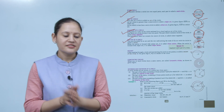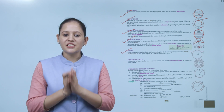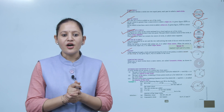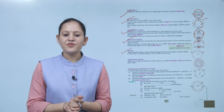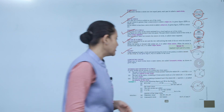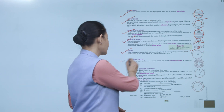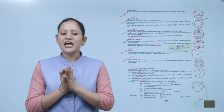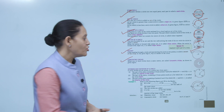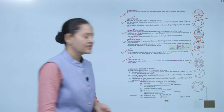Secant: the line passing through the circle and intersecting it at two points is known as a secant of the circle. In the figure, PQ is the secant of the circle. Concentric circles: when two or more circles have the same center, they are called concentric circles.